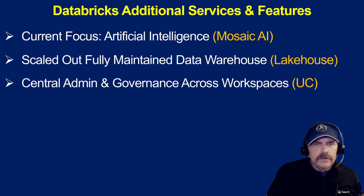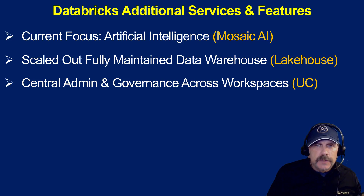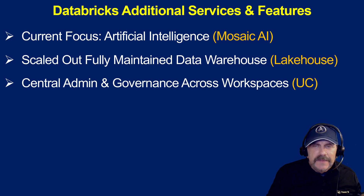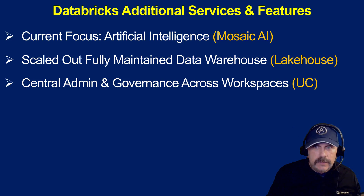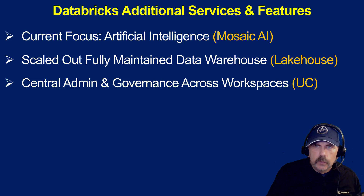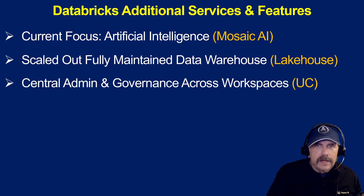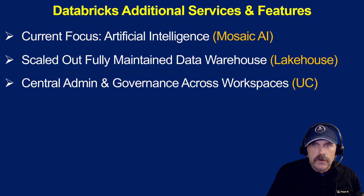In many organizations, there's a need to create any number of Databricks workspaces. Companies will divide workspaces by applications — finance, sales, marketing, and accounting — and within those functional areas, they may also have workspaces separated from dev to testing to QA to production. You can imagine how many workspaces you could end up proliferating. Workspaces in Databricks, until recently, were all very isolated little worlds of their own, making it a challenge for central visibility, administration, and governance, including security. That was solved by Unity Catalog, which provides one pane of glass to administer, secure, and govern all of your workspaces.